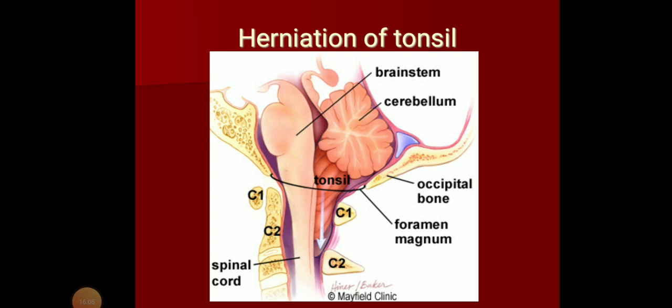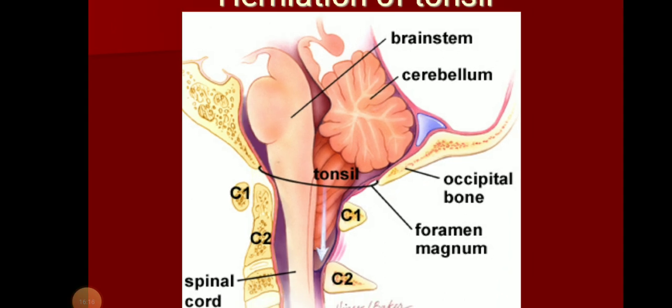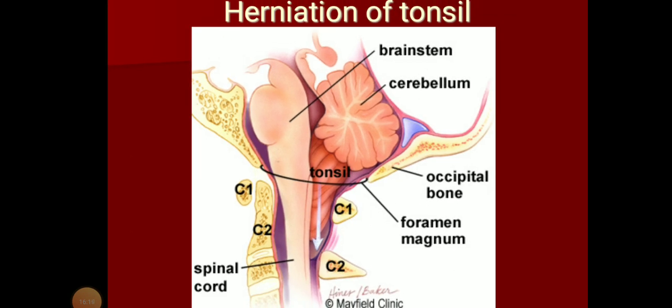One important clinical condition is herniation of the cerebellar tonsil. If there is increased intracranial pressure, there is a chance of herniation of the tonsil through the foramen magnum. This is a very life-threatening complication — herniation of the tonsil can compress the medulla and affect the respiratory center and circulatory center present there, producing life-threatening situations.